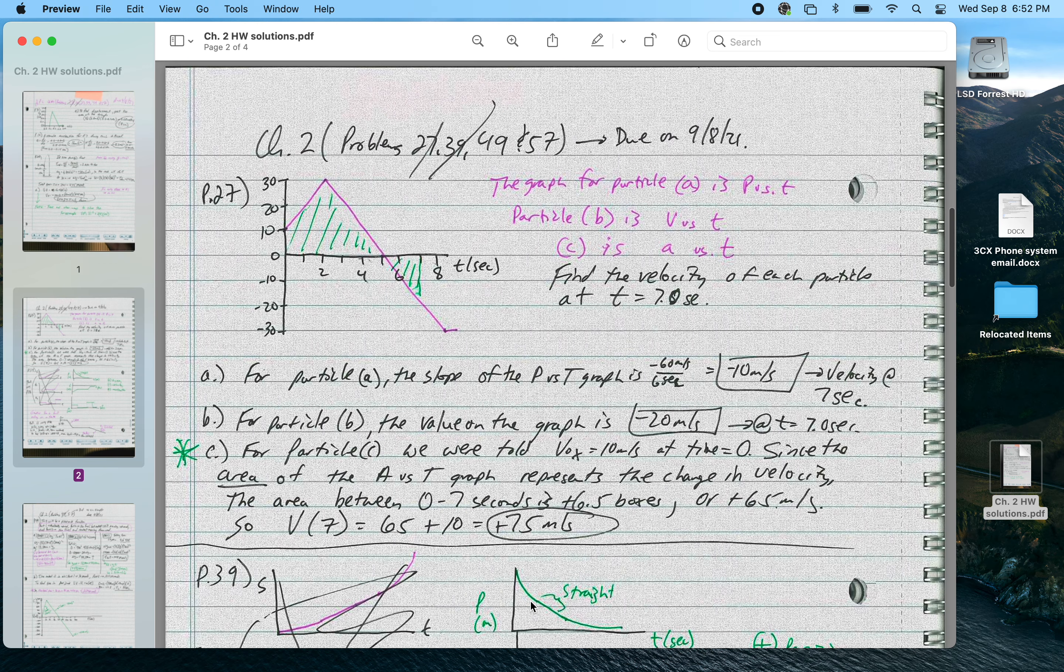Next, problem 27. We had these three graphs. I think we went over these in class. Position graph, we simply define the velocity at 7 seconds. We look at the slope, the slope of this region is negative 10 meters per second.